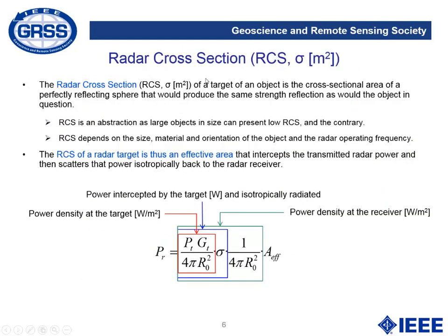The radar cross-section, or RCS, of a target is the cross-sectional area of a perfectly reflecting sphere that will produce the same strength reflection as would the object in question. RCS is an abstraction, as large objects in size can present low RCS and vice versa. RCS depends on the size, material, geometry and orientation of the object, and the radar operating frequency. The RCS is an effective area that intercepts the transmitted radar power and scatters that power isotropically back to the radar receiver.